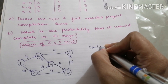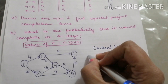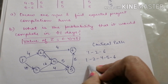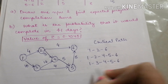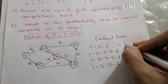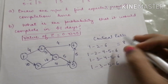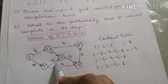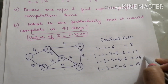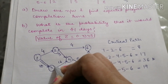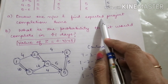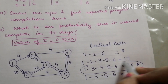Now to find the critical path, node 6 is the last activity. The alternate paths are: path 1-2-6 with length 4+4=8; path 1-2-4-5-6 with length 4+3+5+5=17; path 1-3-4-5-6 with length 10+16+5+5=36; and path 1-3-5-6 with length 10+4+5=19. The maximum time path is 1-3-4-5-6, so this is the critical path. The expected project completion time is 36.